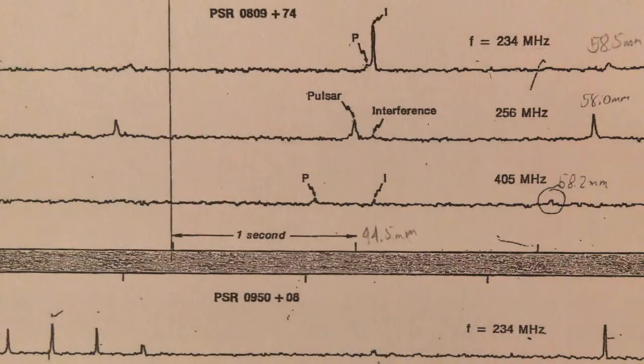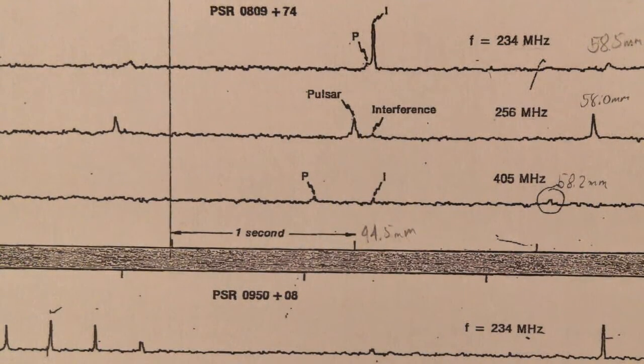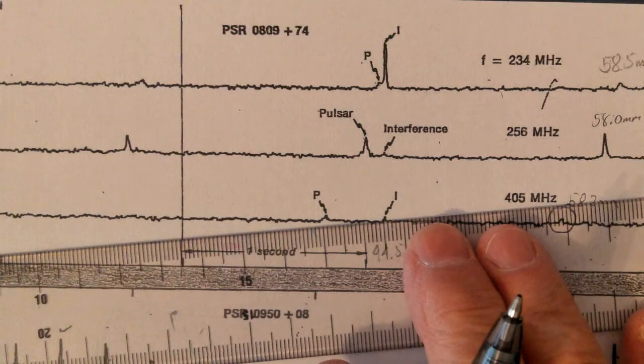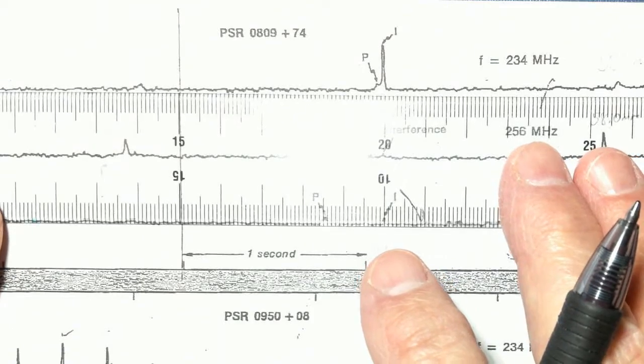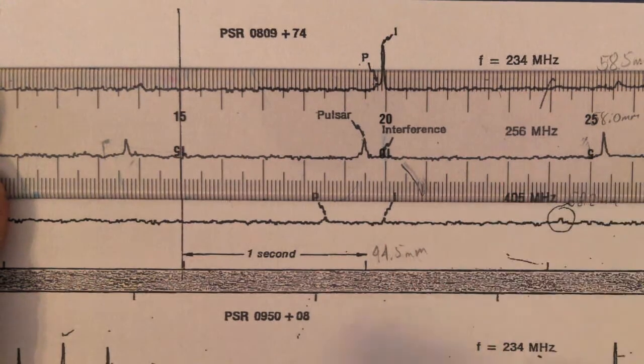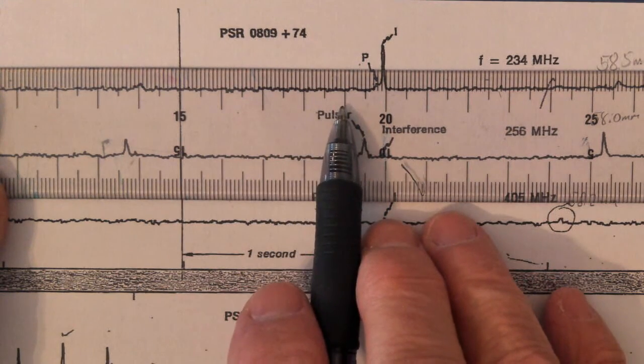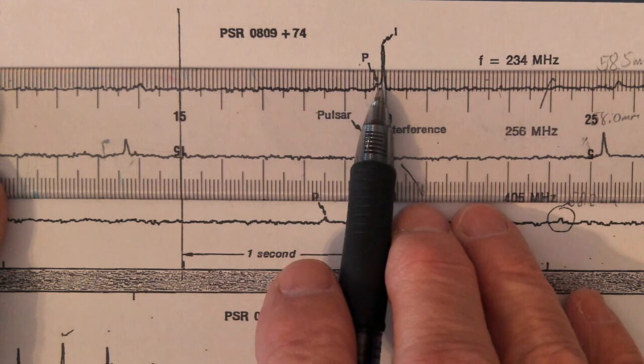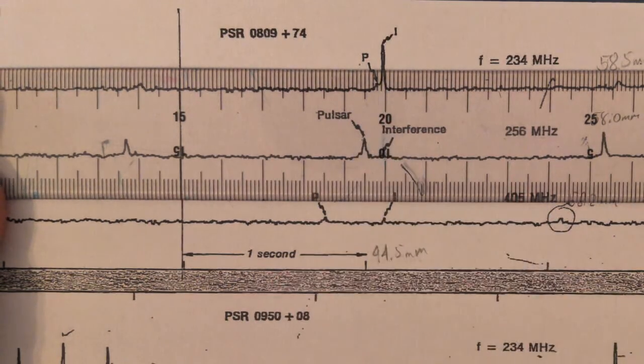Now we're going to measure the distance from the line to the pulse. Measuring from the line to the pulse. This is 10, 20, 30, 40, 45, 46, 47, 48. That looks pretty much right on 48. So I'm going to call that 48 millimeters.